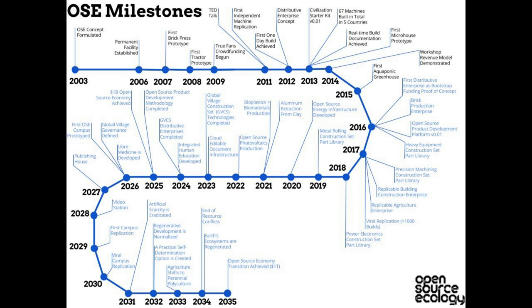The aquaponics greenhouse right now — we're looking at how we can feed ourselves from that, and it looks really good on Facebook right now. Things were started in the middle of winter. Right now we've got an abundance of bok choy, lettuce, and kale. I'm pushing that forward.